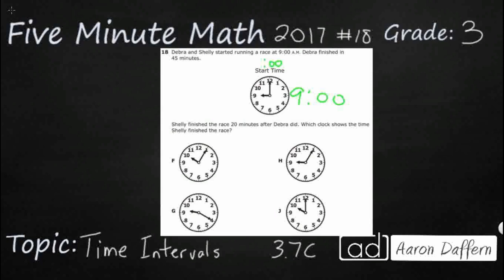Deborah finished in 45 minutes. Now, if we just stop right there, we can actually find one of our answer choices, and it's going to be incorrect. So adding time is going to be a little bit difficult. Sometimes you can add time vertically, like you would add other things, and then sometimes you can't. And so let me show you an example.